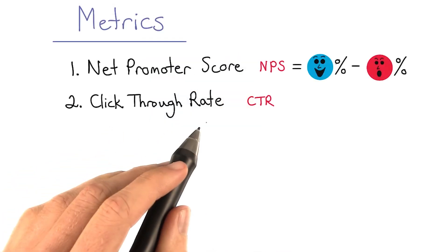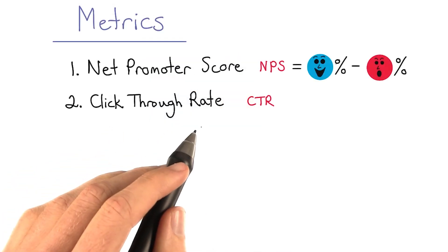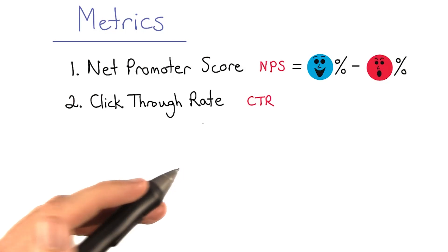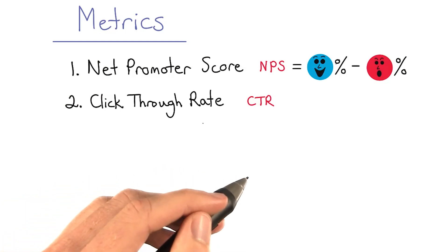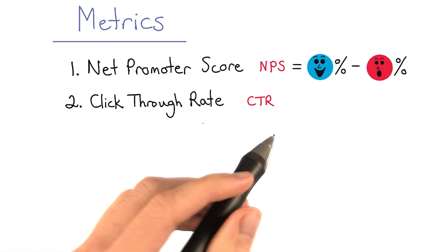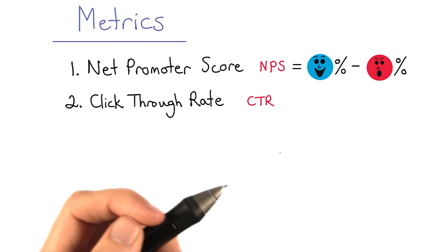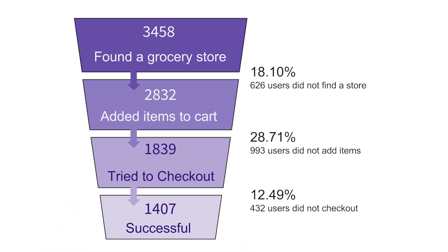Click-through rate is another metric that you'll find associated with website buttons, links, and email campaigns. With CTR, you're measuring whether or not a user took action. CTRs are helpful for determining how customers advance through steps of a purchase.